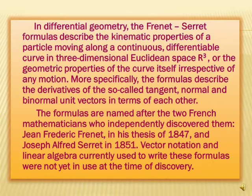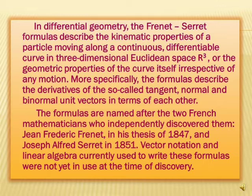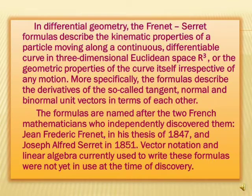More specifically, the formulas describe the derivatives of the so-called tangent, normal, and binormal unit vectors in terms of each other. The formulas are named after the two French mathematicians who independently discovered them: Jean Frenet in his thesis of 1847 and Joseph Alfred Serret in 1851.